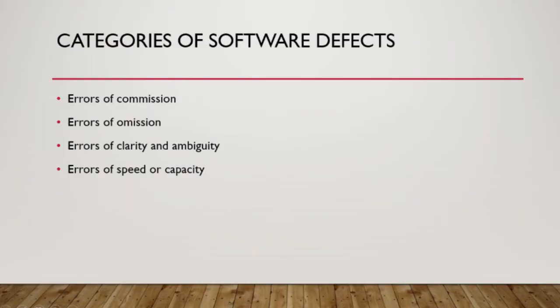Let's discuss the categories of software defects. There are many categories: error of omission, error of commission, errors in clarity and ambiguity, and errors in speed and capacity. Error of commission means errors where data has been put into the code and the code is producing a wrong result. Error of omission means we have missed something — for example, requirements were missed, or brackets were not put in our code.